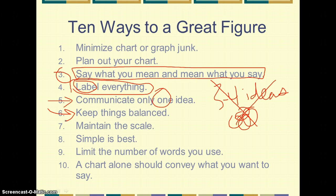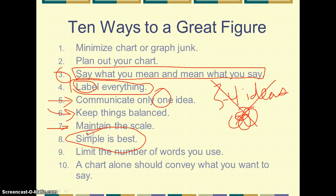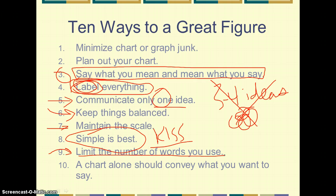Fifth, keep your information balanced so the chart is visually appealing — use space in a way that is balanced for your reader, and represent what the data says. Sixth, maintain scale; it's easy to cheat by starting at a higher value than the base. Seventh, keep it simple — the KISS rule: keep it simple, silly. Eighth, limit the number of words you use. Label everything and communicate efficiently. The chart alone should be able to convey what you want to say, though I always recommend using text to describe it as well.